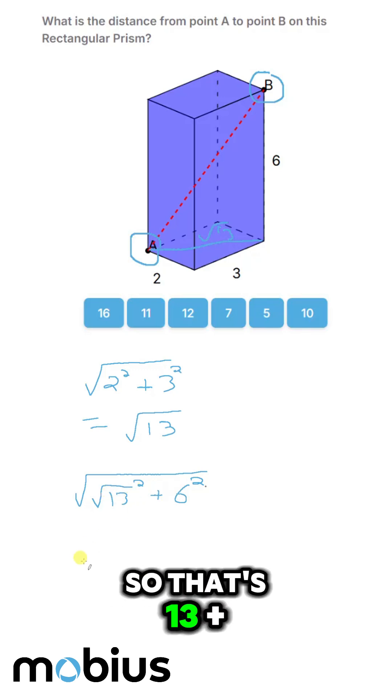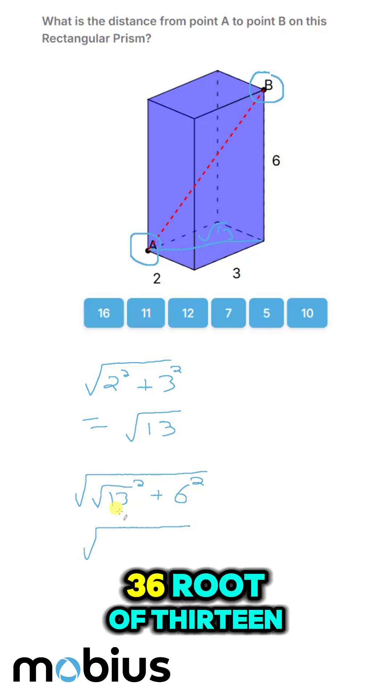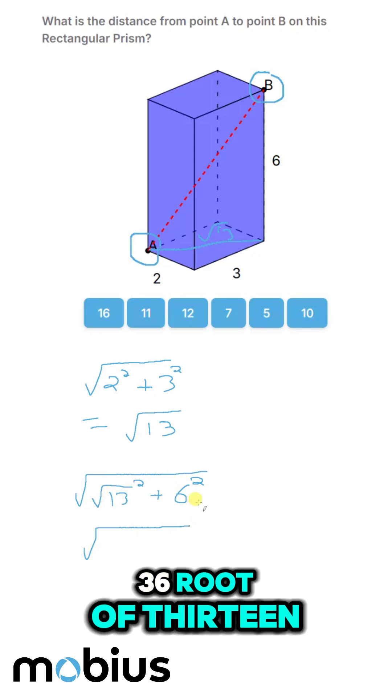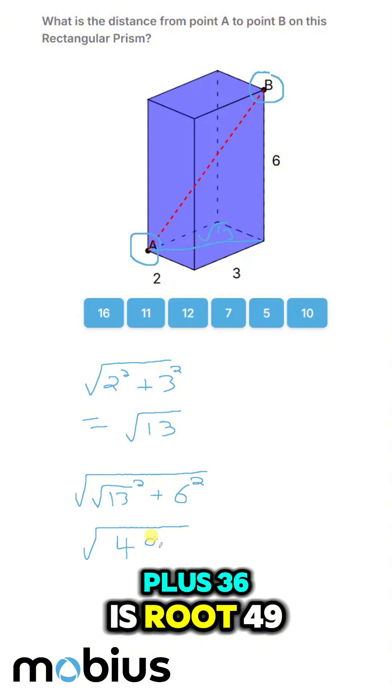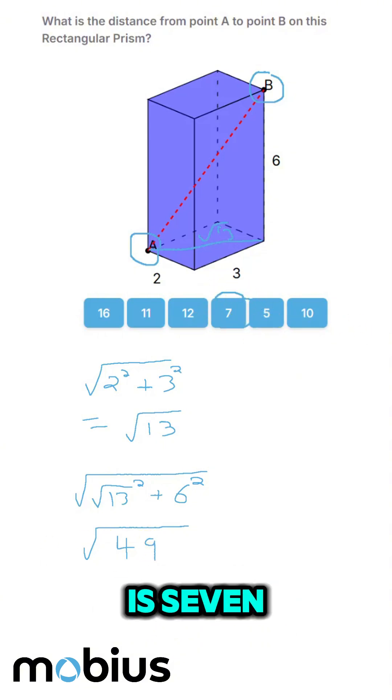So that's 13 plus 36. The root of 13 plus 36 is root 49, and the root of 49 is 7.